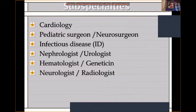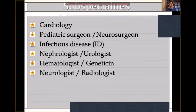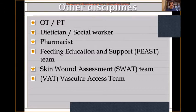To start initial care, you also need a lot of subspecialty support: cardiologist, pediatric surgeon, neurosurgeon, ID team, nephrologist, urologist, hematologist, geneticist, neurologist, and radiologist. Other disciplines include occupational therapist, physiotherapist, dietitian, social worker, pharmacist, feeding group, skin care group, and vascular access team.